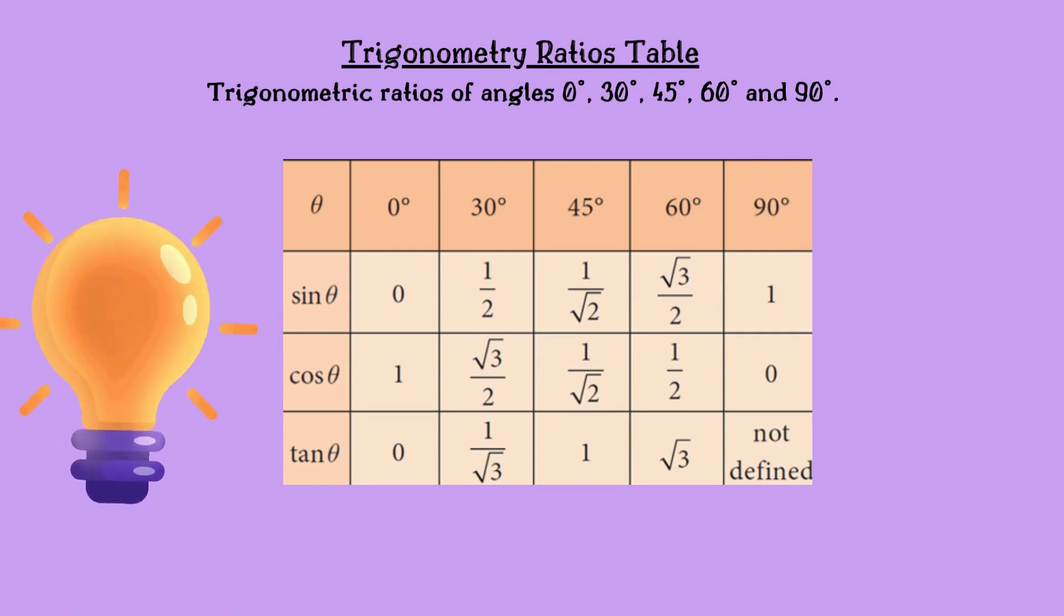Now tan 0 degree is 0, tan 30 degrees is 1 by root 3, tan 45 degrees is 1, tan 60 degrees is root 3, tan 90 degrees is not defined.